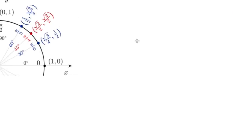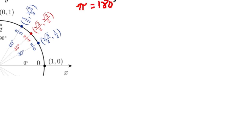We're going to look at the first quadrant and figure out where these points come from. The first point is radical 3 over 2 and 1 half. The hint is that over here you see 30 degrees and pi over 6. Pi over 6 is 180 over 6, which is 30 degrees — in a unit circle, pi equals 180 degrees. So pi divided by 6 gives us 30 degrees, and here we have a 30 degree angle.